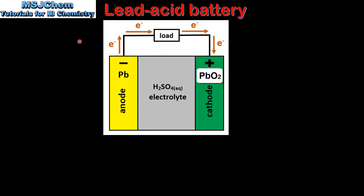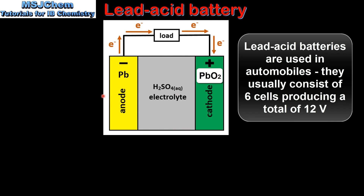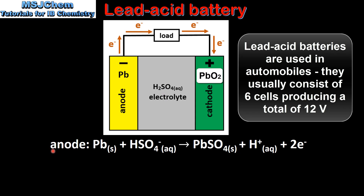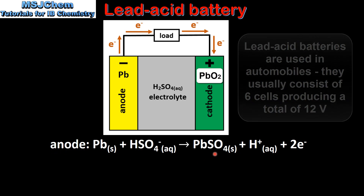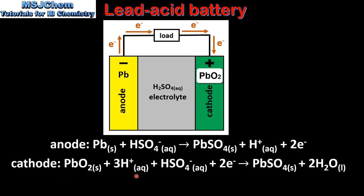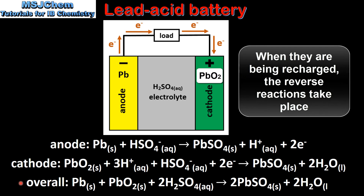We'll start by looking at a lead acid battery. In a lead acid battery the anode is lead, the cathode is lead oxide, and the electrolyte is sulfuric acid. Here we have the reaction that occurs at the anode — lead is oxidized to form lead sulfate. At the cathode, lead oxide is reduced to also form lead sulfate. Here we can see the overall equation for the reaction. The sulfuric acid is used up in the reaction. When the battery is recharged the reverse reactions take place.